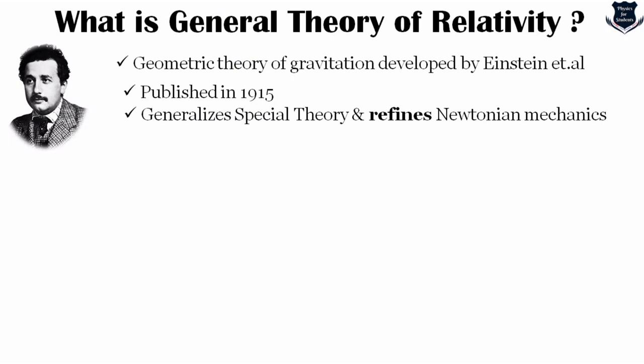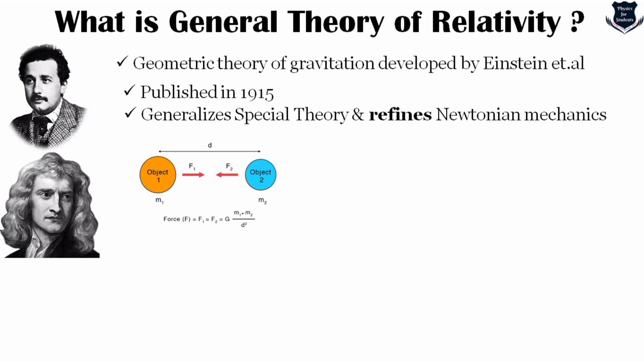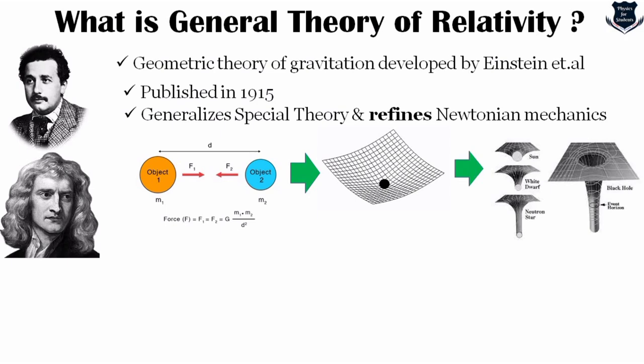The relation is specified by Einstein's field equations, a system of second-order partial differential equations. Newton's law of universal gravitation, which describes classical gravity, can be seen as a prediction of general relativity for the almost flat spacetime around us. As shown in the figure, Newton's law generalizes to spacetime curvature: the sun creates a curvature, a white dwarf creates a bigger curvature, a neutron star even bigger, and a black hole represents the highest curvature of infinite density.